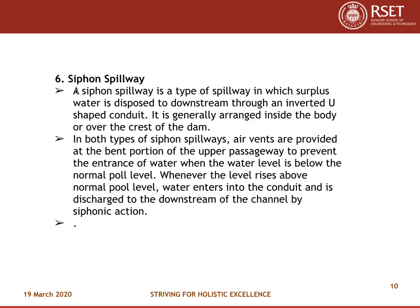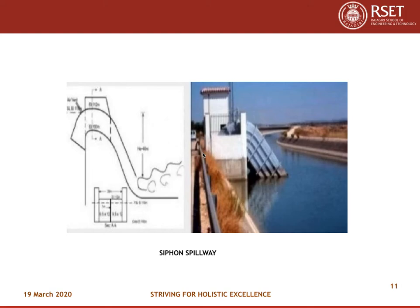Next is the siphon spillway. A siphon spillway is a type of spillway in which surface water is disposed to the downstream through an inverted U-shaped conduit. It is generally arranged inside the body or over the crest of the dam. In both types of siphon spillway, air vents are provided at the bent portion of the upper passageway to prevent the entrance of water when the water level is below the normal pool level. Whenever the level rises above normal pool level, water enters into the conduit and is discharged to the downstream of the channel by siphonic action.